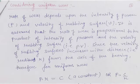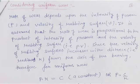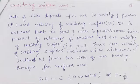The rate of wear depends on the intensity of pressure P and the velocity of the rubbing surface V. Assume that the rate of wear is proportional to the product PV. The velocity of the rubbing surface depends on the distance, which is our radius r. So we can write P into R equals to C, where C is a constant.